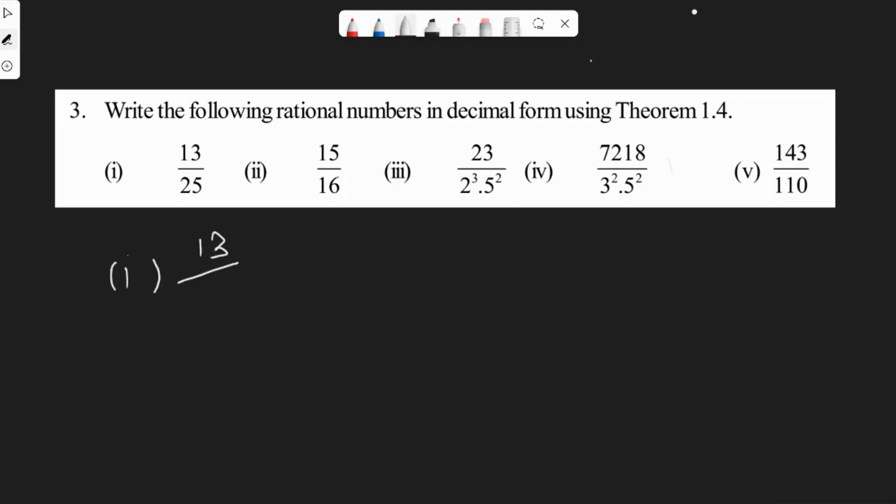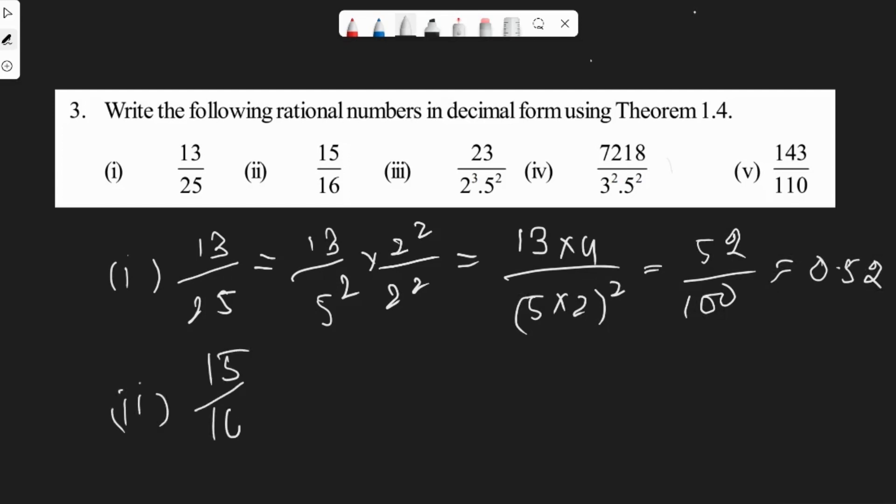First one: 13 by 25. The prime factorization of 25 is 5 square, so we have 13 by 5 square. Since the power of 5 is 2, multiply and divide by 2 square. We'll get 13 into 4 by 5 into 2 whole power 2. 13 into 4 is 52 by 100, we'll get 0.52.